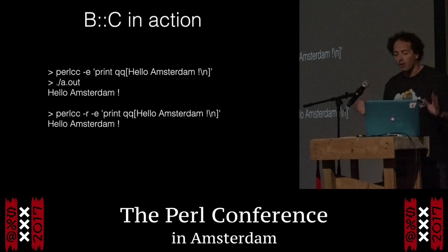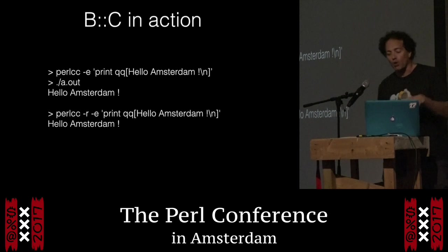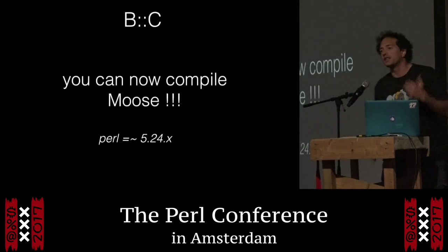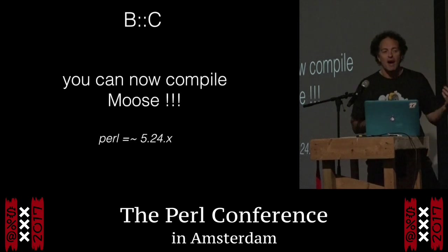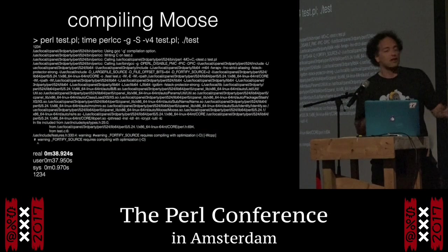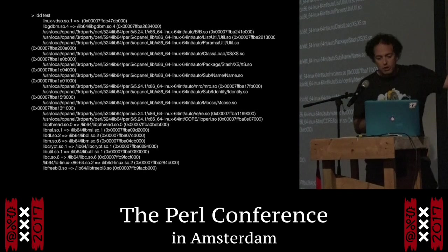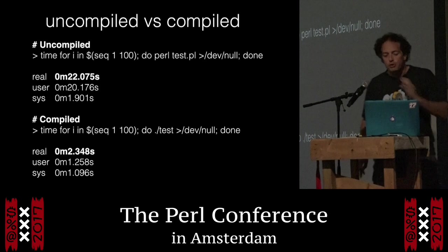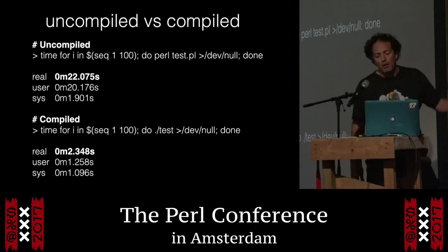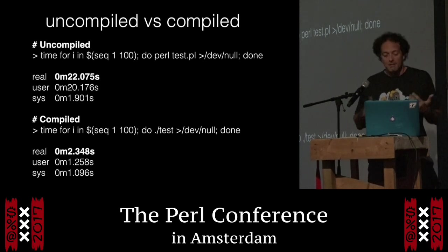Very simply, perlcc is like Perl — you can use dash-e and it will produce a binary (by default a.out) that you can run. You can also use the dash-r option to automatically run it. Right now with the 5.24 version, you can even compile Moose. It's a very simple basic Moose program. It takes about 40 seconds to compile. Once you have it, you can see it's linked to some XS modules. The uncompiled version on my laptop takes 20 seconds to run. The compiled version takes only two seconds. So we divide the runtime by 10 by compiling a binary, and now there is Moose support. Everything is online — you can find the original on MetaCPAN and also on GitHub.